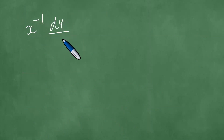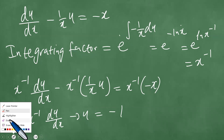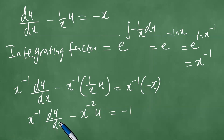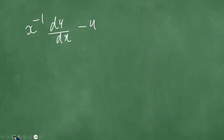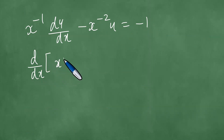We have x to the minus 1 du/dx, and this becomes minus x to the minus 2 times u, which equals minus 1. We write this as d/dx of x to the power minus 1 times u, which equals minus 1.